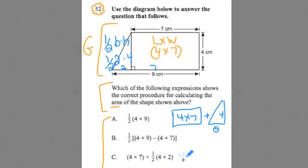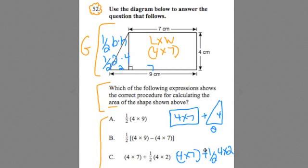So it would be 4 times 7 plus 1 half 4 times 2, or 4 times 2. Sort of working through this, here's the area expression for the area of a rectangle. Here's the expression for the area of the triangle.